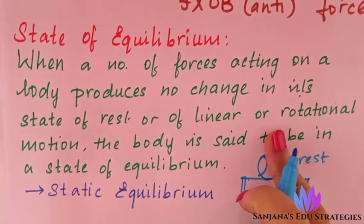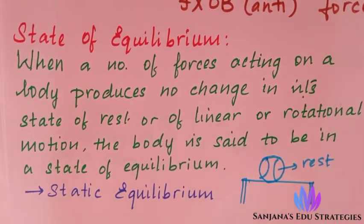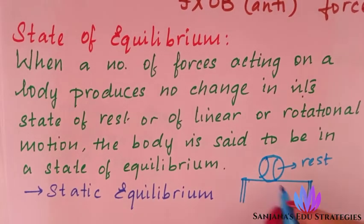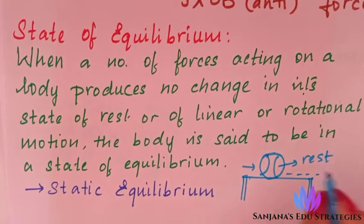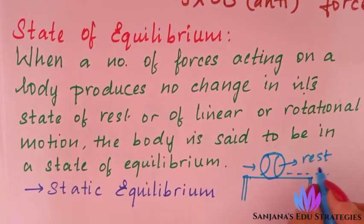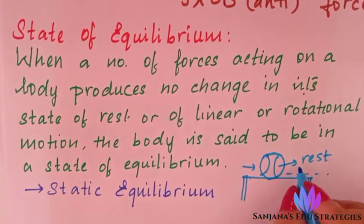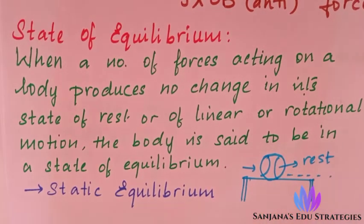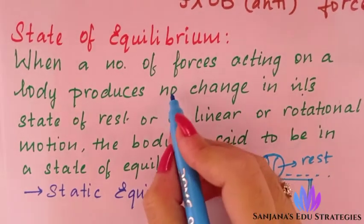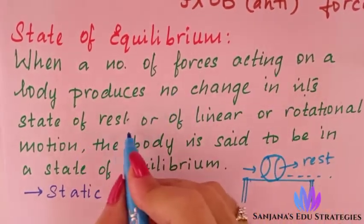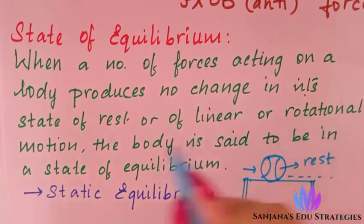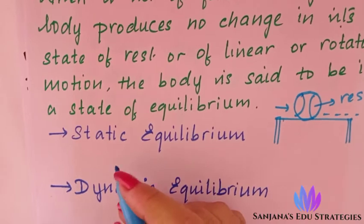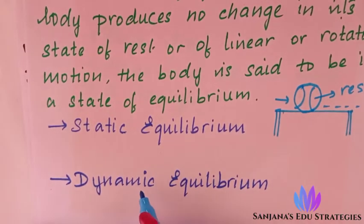Some bodies will be in linear motion, and even then there is no change in their linear motion. When I apply a force, this ball starts to move. When it is in linear or rotational motion and no force is being applied, then you can say it is in dynamic equilibrium. So when there is no change in its state of rest or of linear or rotational motion, the body is said to be in a state of equilibrium. There are two types: static equilibrium and dynamic equilibrium.